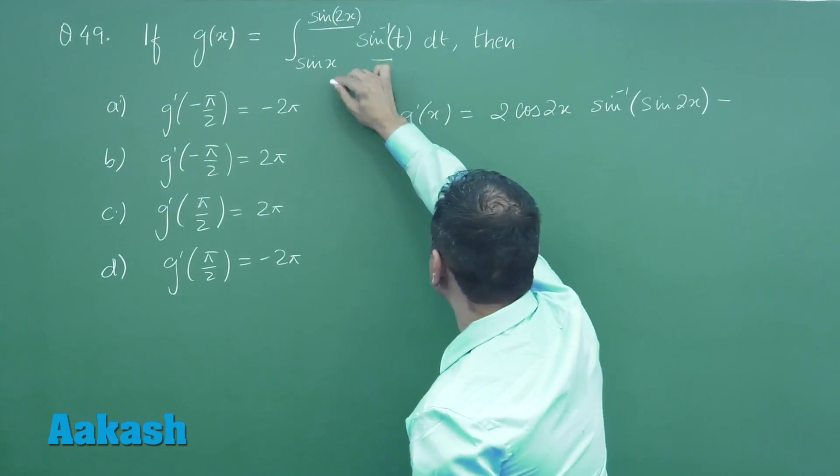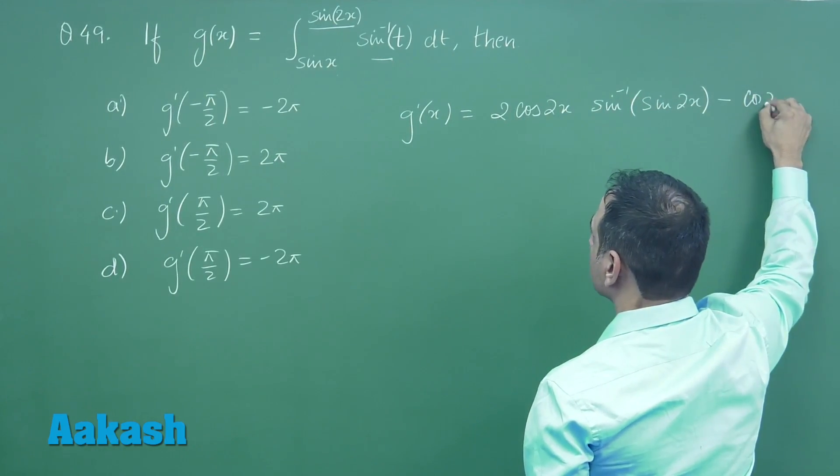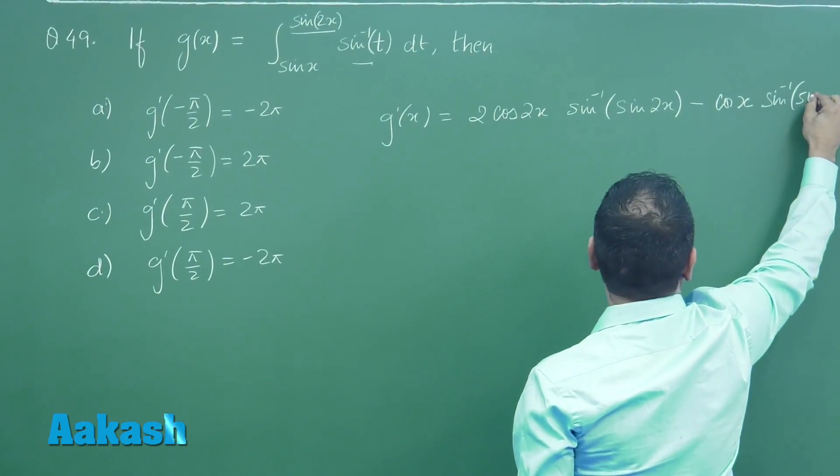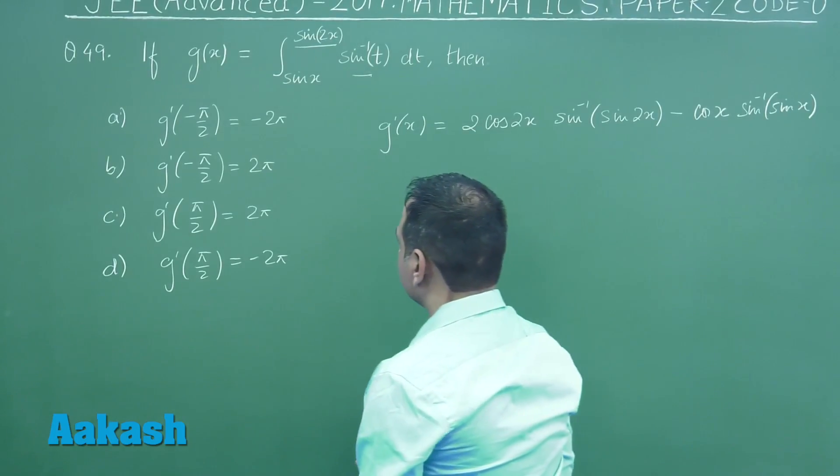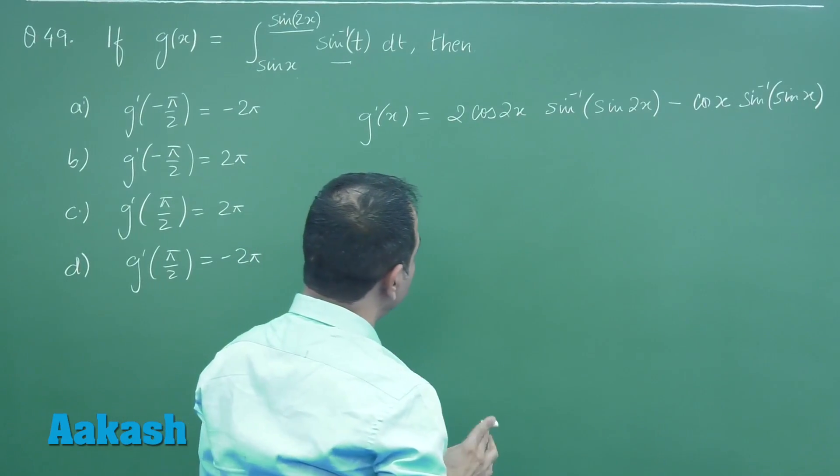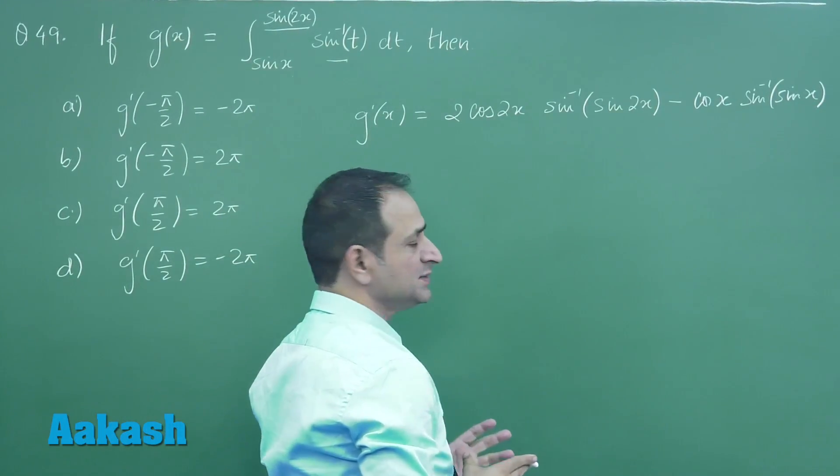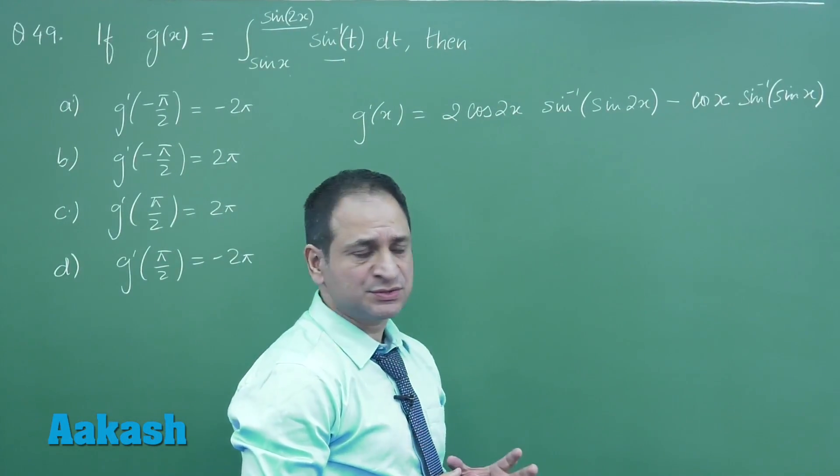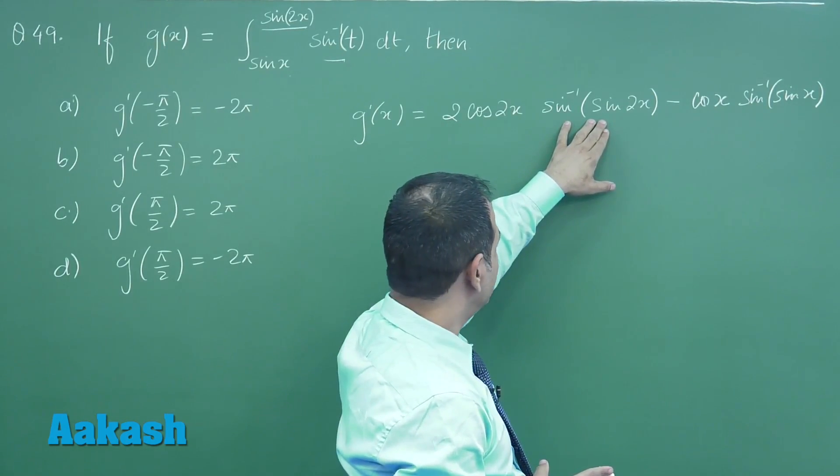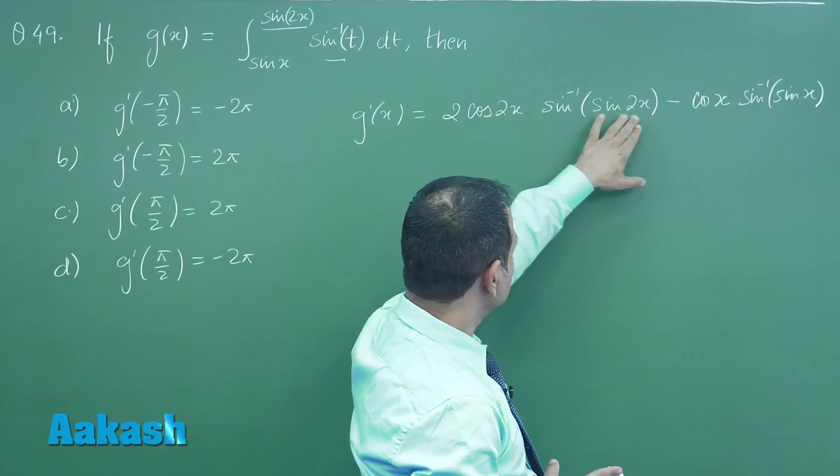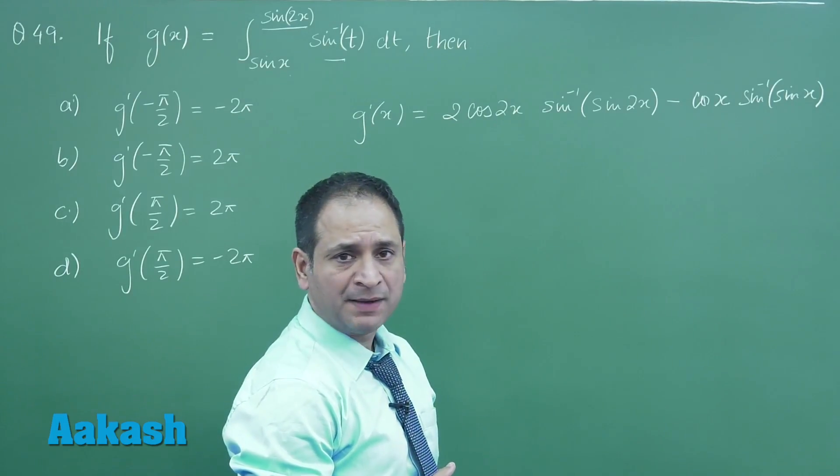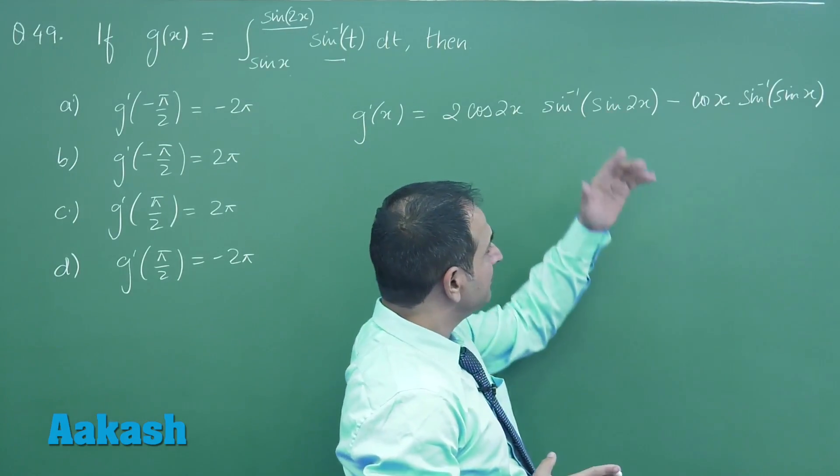The derivative of the lower limit is cos x, and again substituting sin x here. Now evaluating at minus pi by 2 and pi by 2. There was a common mistake which was done usually by most of the students because this term was written as 2x simply, but you know if 2x is not lying in the range of sin inverse, that is minus pi by 2 to pi by 2, you can't write them simply as 2x.